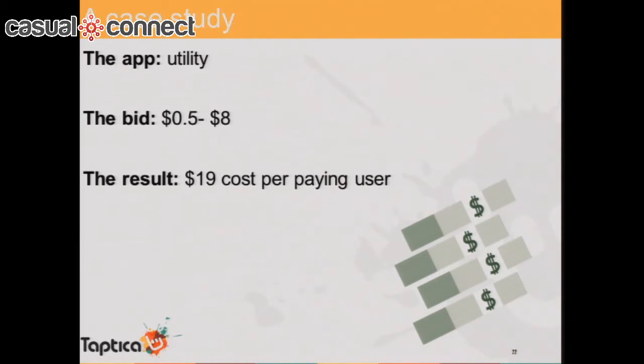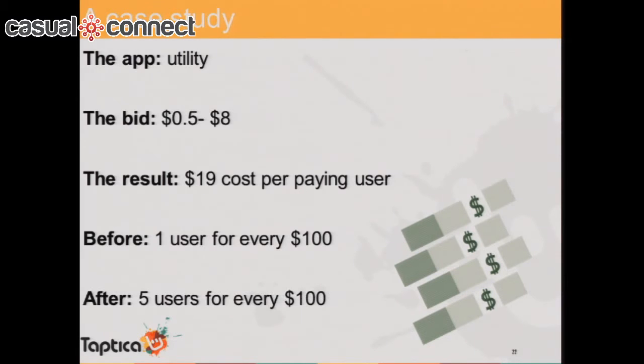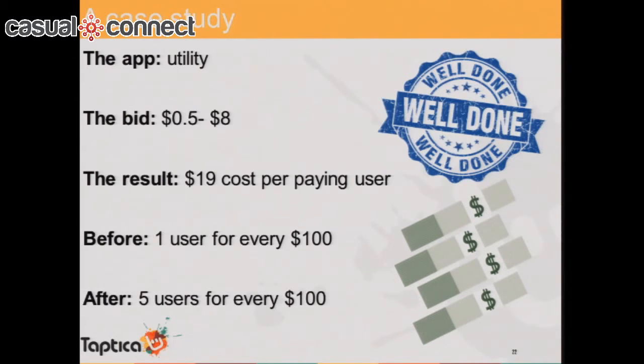Let's see the results. The same application — now bidding not $4 but everything between half a dollar to $8. What was the cost per paying user? It was $80 before. Anyone want to throw out a wild guess? The cost came down to $19. We started from $80 and got to $19 — which means that for every $100 they're paying, they're getting not one user but five users. Which is quite awesome.